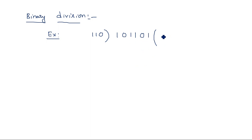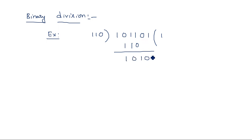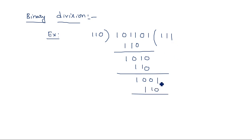First, multiply divisor 1 1 0 by 1 and compare. 1 1 0 is 6 but the first three digits 1 0 1 equal 5, so 6 does not fit — take one more digit. Subtract: 1 0 1 1 minus 1 1 0 gives remainder 1 0 1. That is 10 minus 6 equals 4, which is 1 0 0. Bring down next digit, giving 1 0 0 1. Divide again: 1 1 0 fits once — 1 0 0 1 minus 1 1 0 gives remainder 1 1, which is 9 minus 6 equals 3.